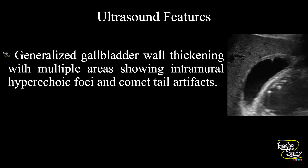So in summary, the gallbladder wall is generalized thickened with multiple focal areas showing intramural hyperechoic foci and comet-tail artifacts. Color Doppler shows twinkling artifacts also. These features conclude as a case of adenomyomatosis of the gallbladder.